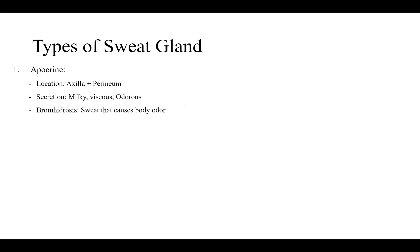There are different types of sweat glands. Apocrine glands are located in the axilla and perineum — basically the inguinal area. Their secretions are milky, viscous, and odorous. Bromohydrosis is the sweat that causes body odor.